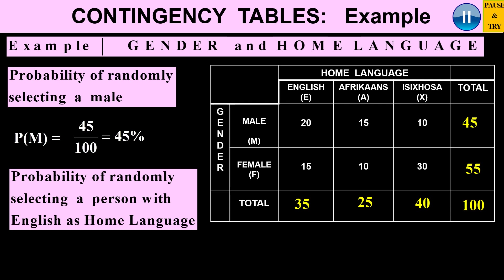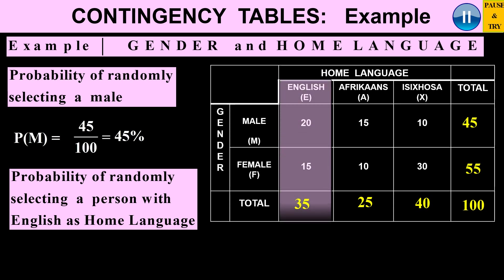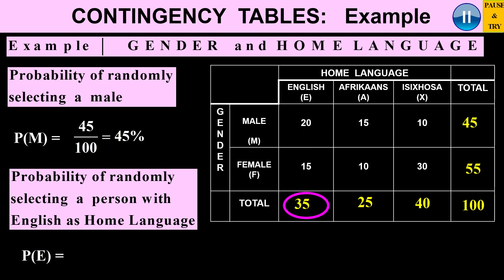The probability of randomly selecting a person with English as a home language: we follow the English column, and 35 people have English as a home language. So the probability is 35 over 100, which is 35%.